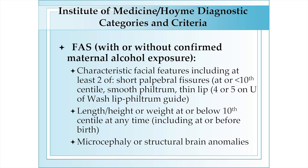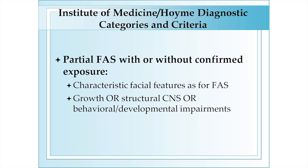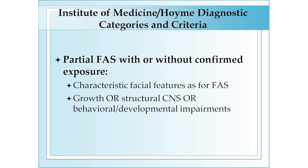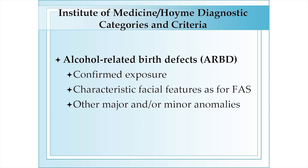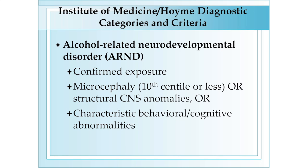Fetal alcohol syndrome is defined as having at least two of the three cardinal facial features, height or weight below the 10th centile, and microcephaly or structural brain abnormalities. Partial fetal alcohol syndrome uses the same criteria, but the child can have either growth or central nervous system abnormalities. For alcohol-related birth defects, confirmation of alcohol exposure is required, along with identification of typical facial features and other major or minor congenital anomalies associated with prenatal alcohol exposure. For alcohol-related neurodevelopmental disorder, confirmation of exposure is also required, and central nervous system abnormalities — either structural or functional — must be identified.